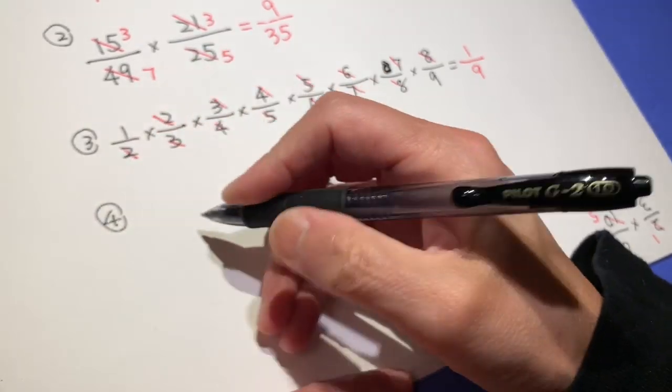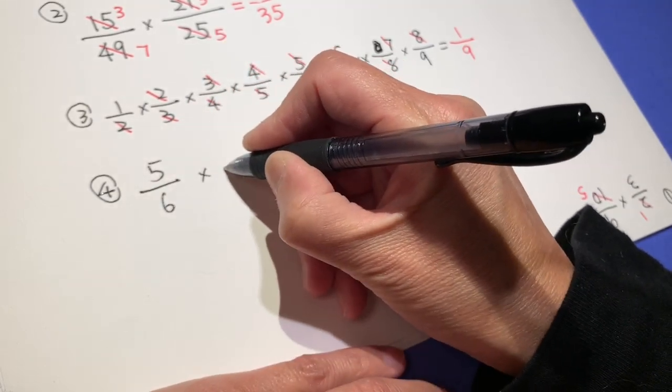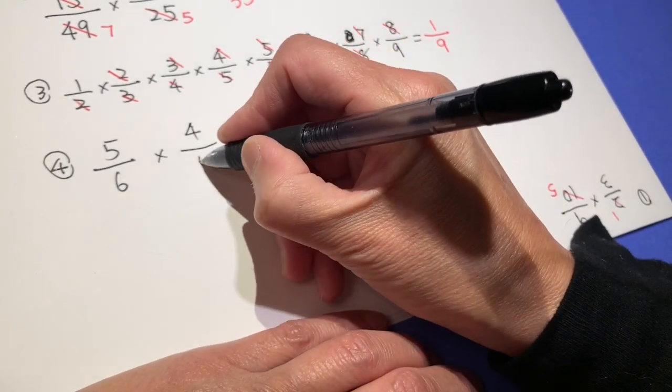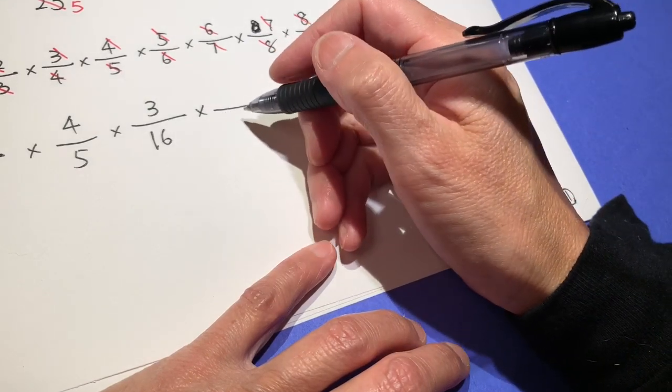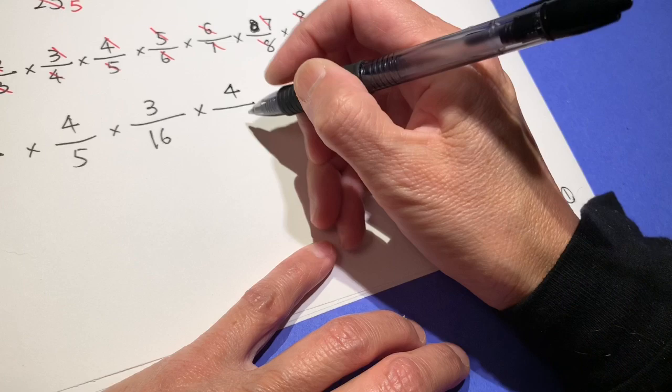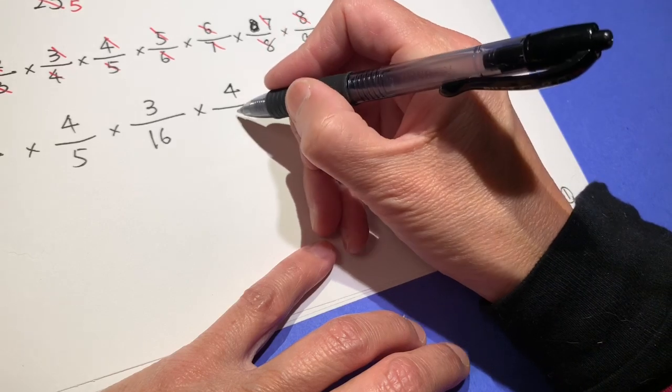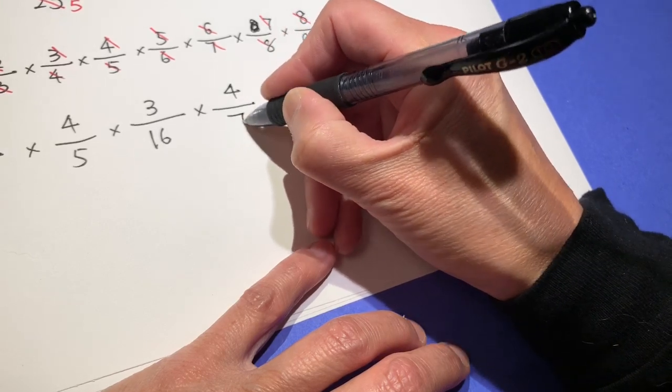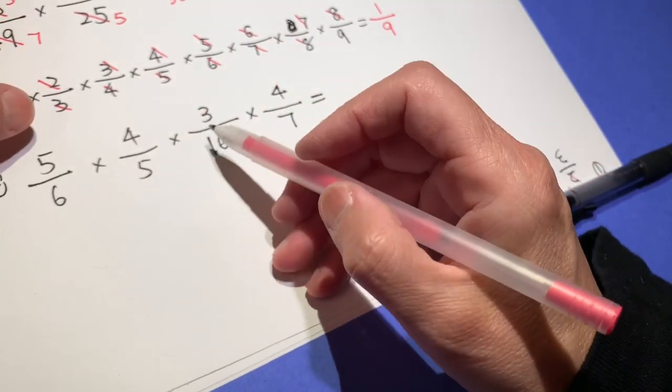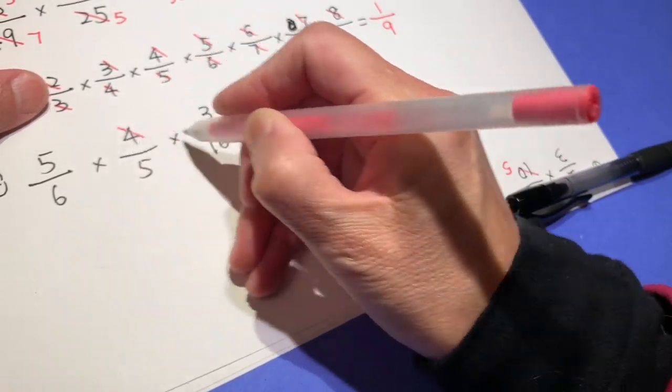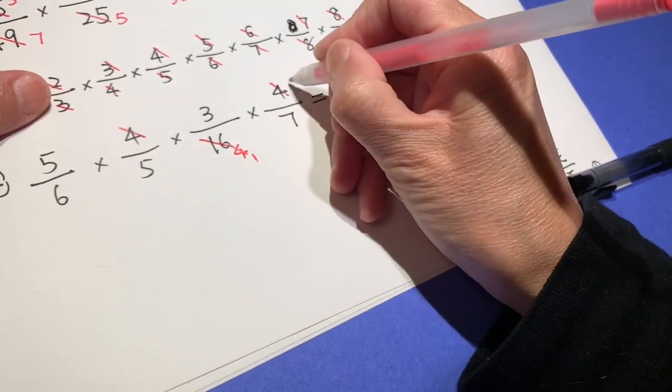Number 4: 5 over 6 times 4 over 5 times 3 over 16. Let me just bring out a random number, 4. Let's see. 4 and 16, 4 divided by 4. We can write 1.